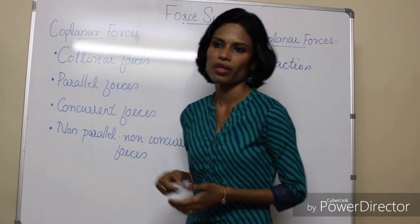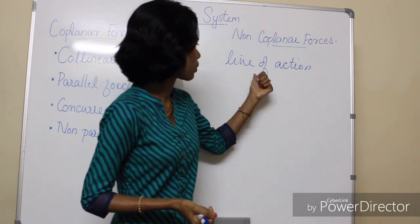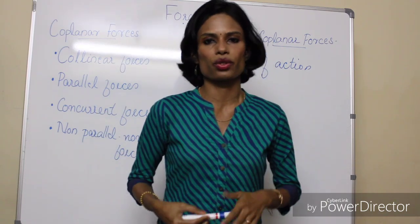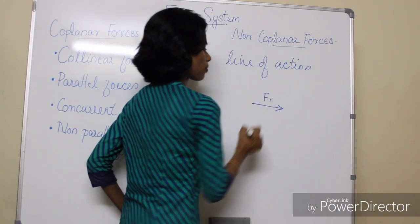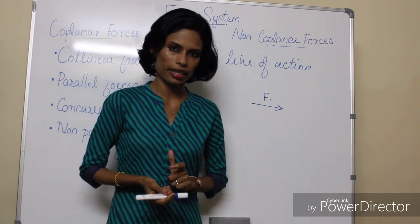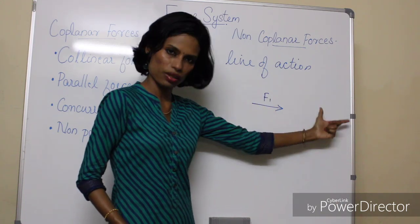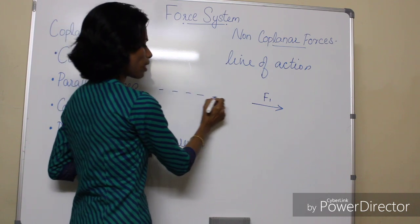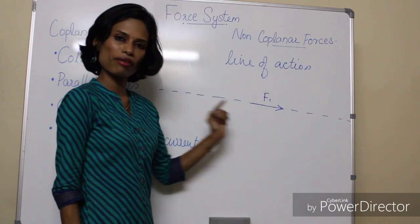First is collinear forces. Before going into detail, let us learn another term: line of action. The line of action of a force is an imaginary line which starts from infinity, includes this force, and goes to infinity. This is the line of action of this force.